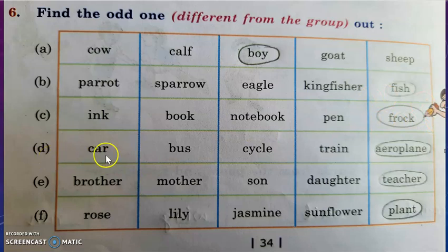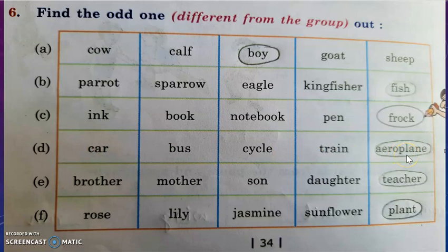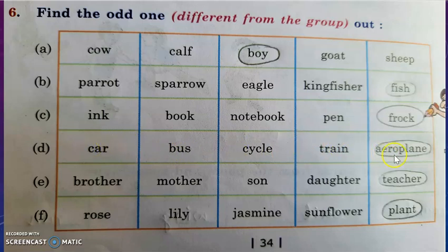Next, D: car, bus, cycle, train, aeroplane. All of these are vehicles and means of transportation. But aeroplane is odd in this group, because the aeroplane flies in the air while the other vehicles run on the road or land. That is why the aeroplane is odd — it comes under air transportation.